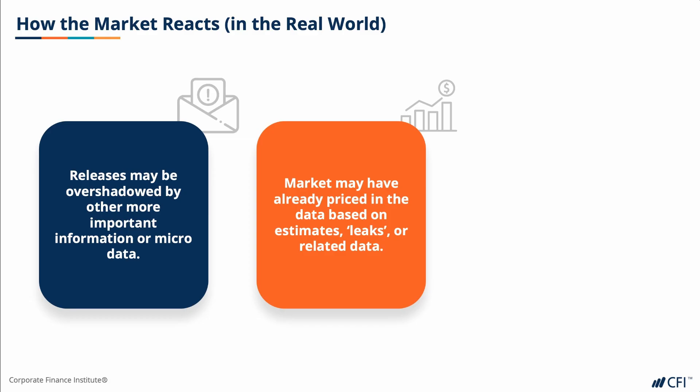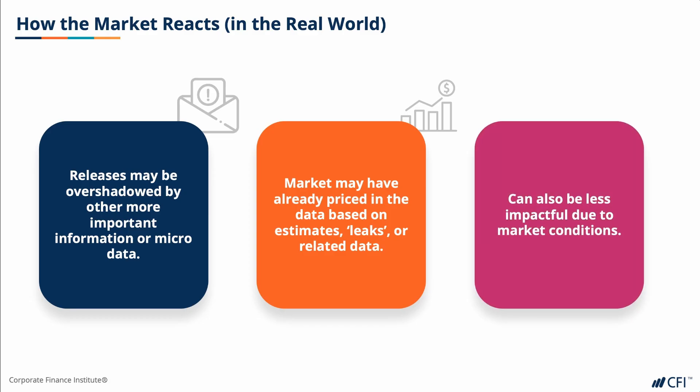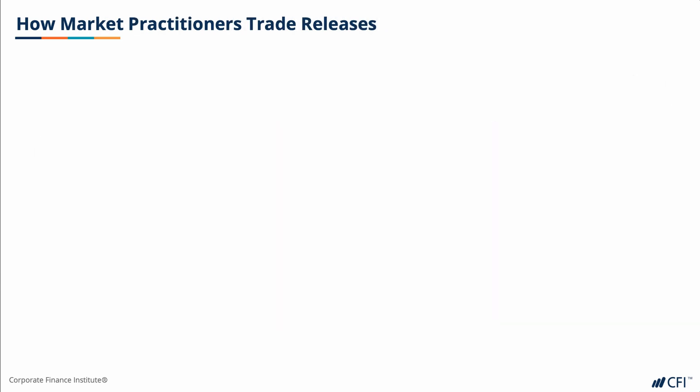The third situation could be due to other market conditions, such as holidays, which impacts market liquidity and the fact that many market participants may be away from the office. It could also be that upcoming data would be more important, so the market is taking a more wait-and-see position. Now that we've examined how the market is expected to move and by how much it may move after economic events, let's look at the different types of players that trade these economic events.